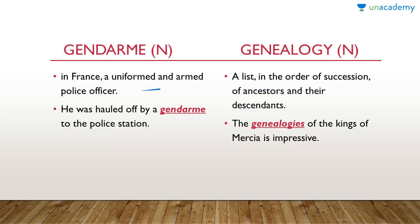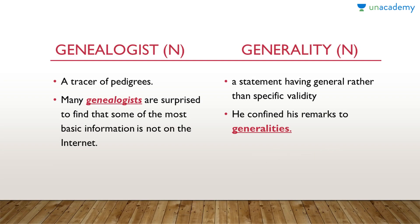Gendarme is a noun, which means in France, a uniformed and armed police officer. In a sentence: 'He was hauled off by a gendarme to the police station.' Next: genealogy, noun, which means a list in the order of succession of ancestors and their descendants. In a sentence: 'The genealogies of the kings of Mercia is impressive.' Genealogist is a noun, which means a tracer of pedigrees. In a sentence: 'Many genealogists are surprised to find that some of the most basic information is not on the internet.'